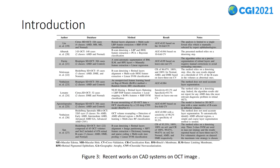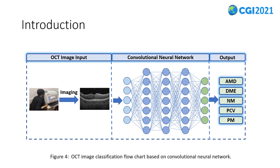Figure 3 summarizes the recent works on CAD systems in retinal OCT. These works fully demonstrate that methods based on machine learning and deep learning can effectively improve the performance of computer-aided diagnosis technology, but there are still problems such as limited types of disease diagnosis, classification accuracy needing further improvement, and imperfect auxiliary diagnosis functions. Figure 4 shows the OCT image classification flowchart based on convolutional neural network. Eye images are collected by OCT equipment, then input into the convolutional neural network to learn the classification model, and finally accurate classification of different eye diseases is realized.